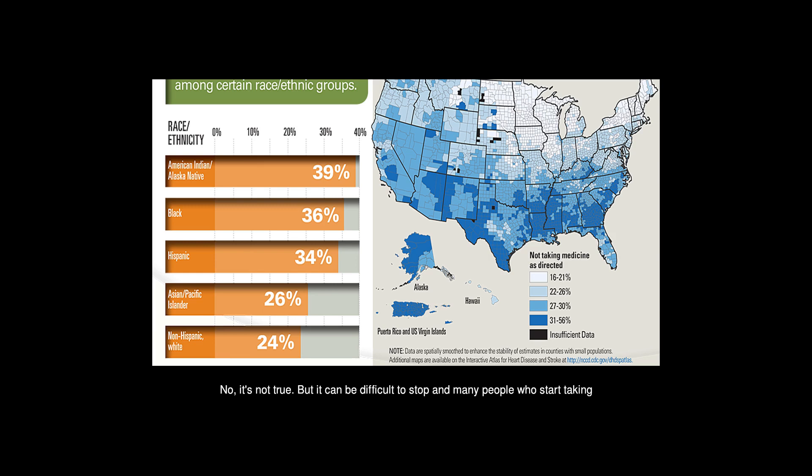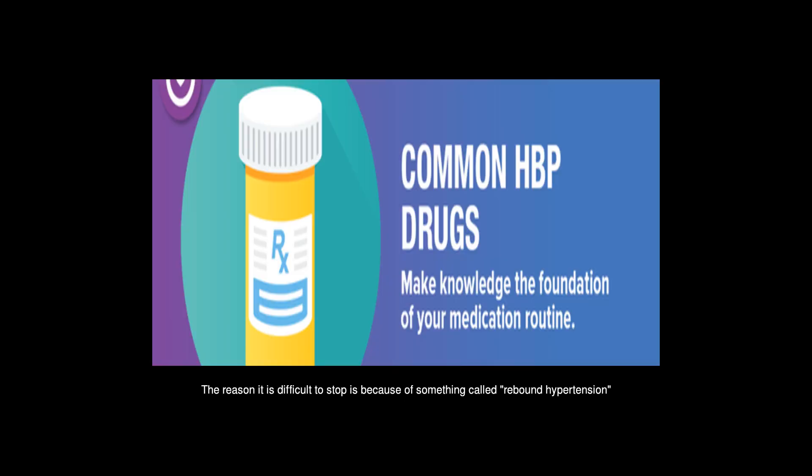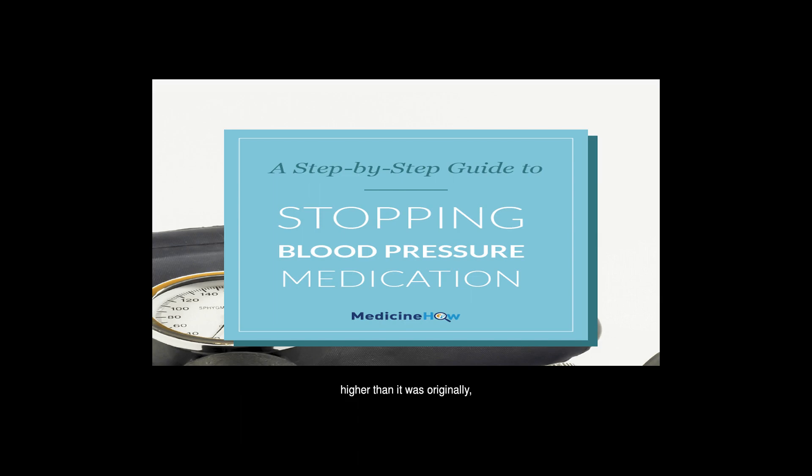No, it's not true. But it can be difficult to stop, and many people who start taking drugs for blood pressure keep taking them for the rest of their life. The reason it is difficult to stop is because of something called rebound hypertension, when your blood pressure shoots straight up higher than it was originally when you stop taking the medication suddenly.